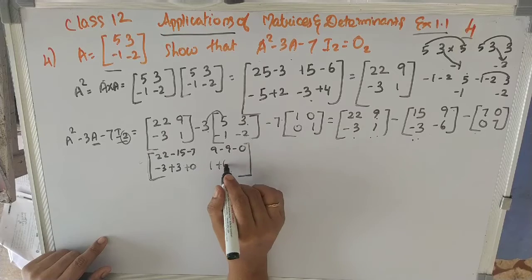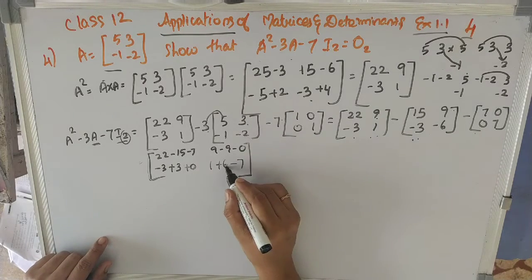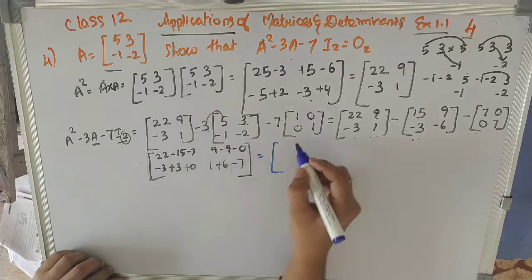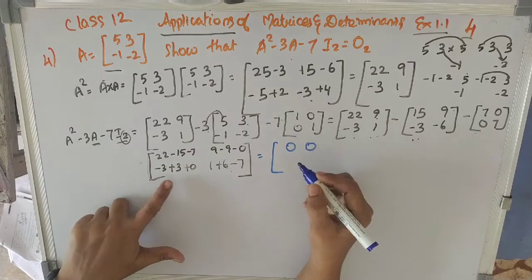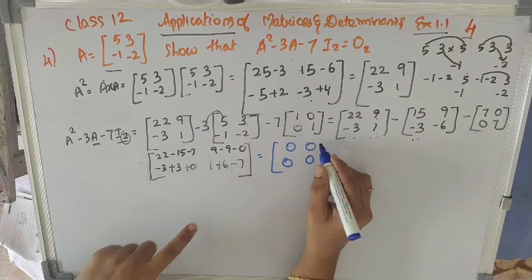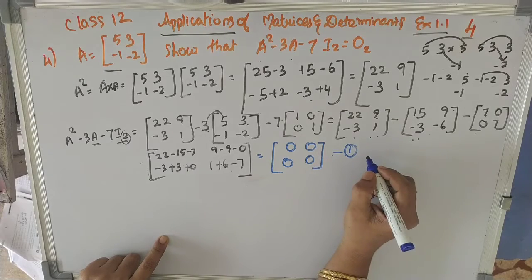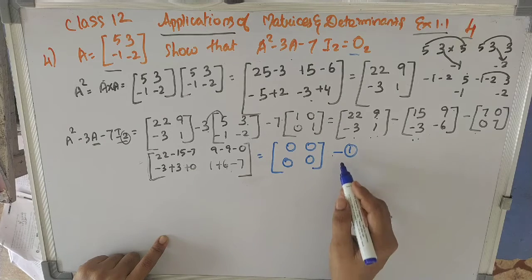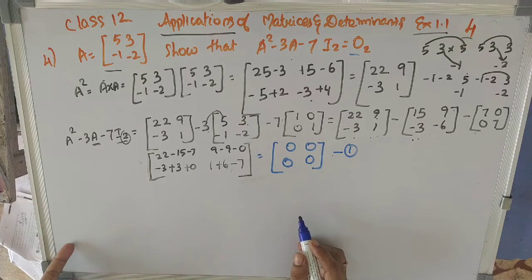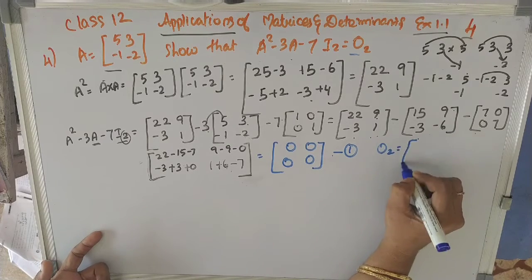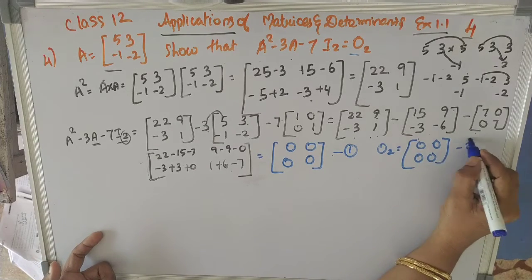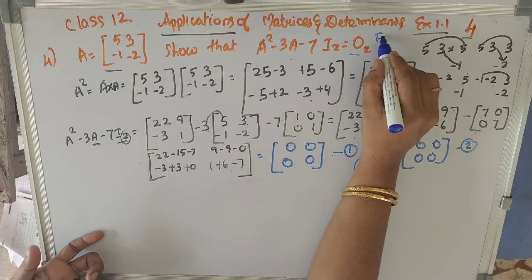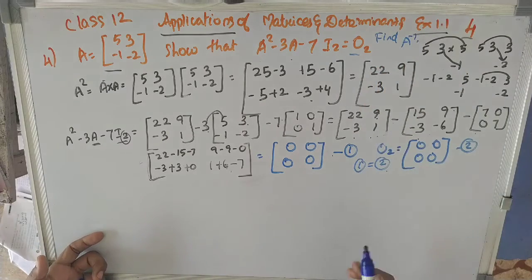Simplifying: 22 minus 22 is 0, 9 minus 9 is 0, minus 3 plus 3 is 0, and 7 minus 7 is 0. This is result 1 — the zero matrix. The right-hand side O₂ is a 2×2 matrix with all elements equal to 0. Comparing both sides they are equal, therefore A² minus 3A minus 7I₂ equals O₂.